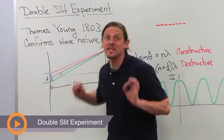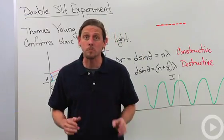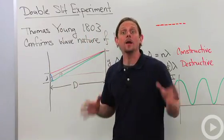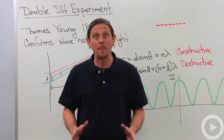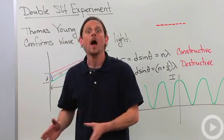Let's talk about the double slit experiment. This is an extremely important experiment that was first performed by Thomas Young in 1803, and it was the first experiment that gave conclusive evidence that light behaves as a wave.